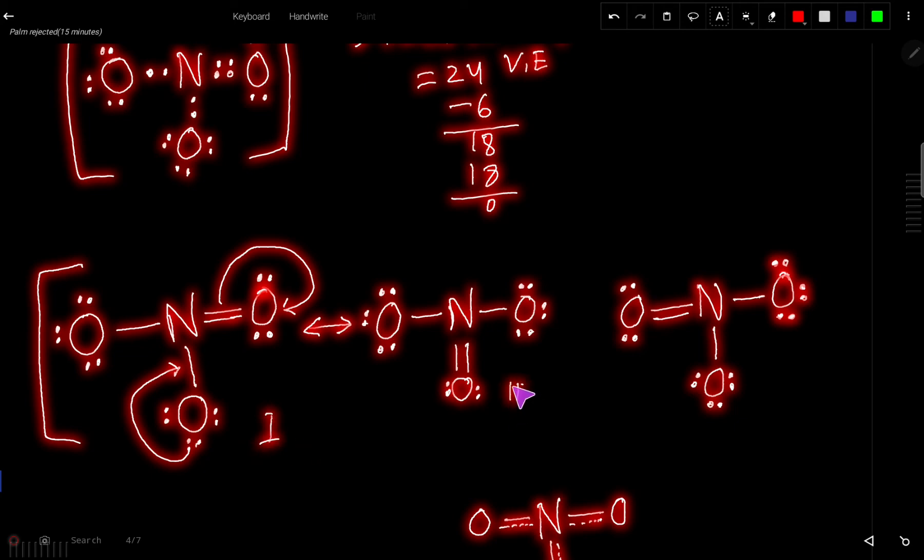This is structure one, this is structure two. And if this electron pair come here, then this will come here. So we are getting this structure three.